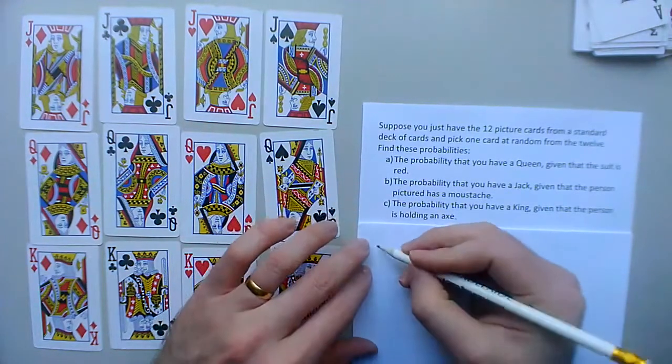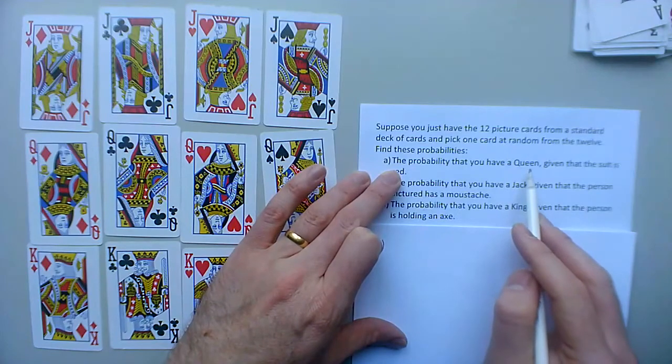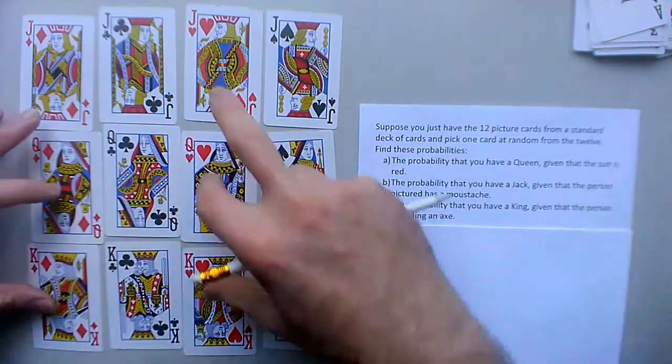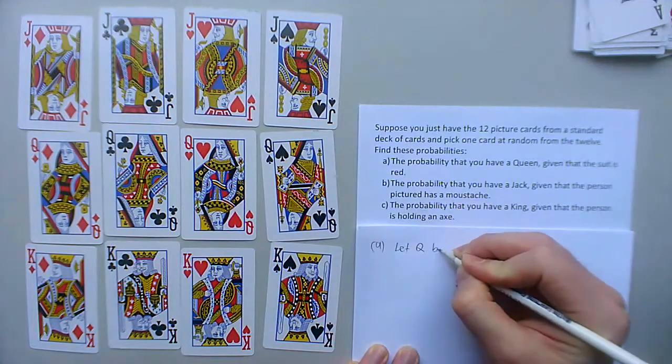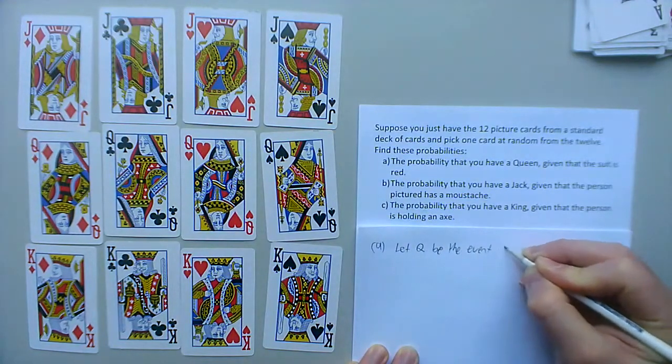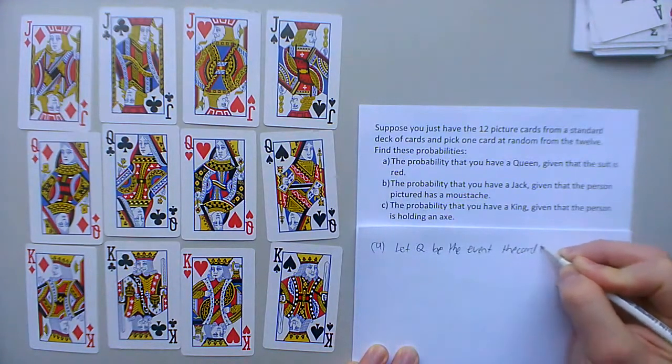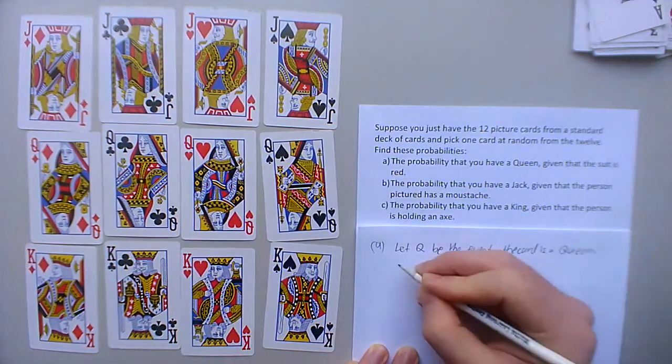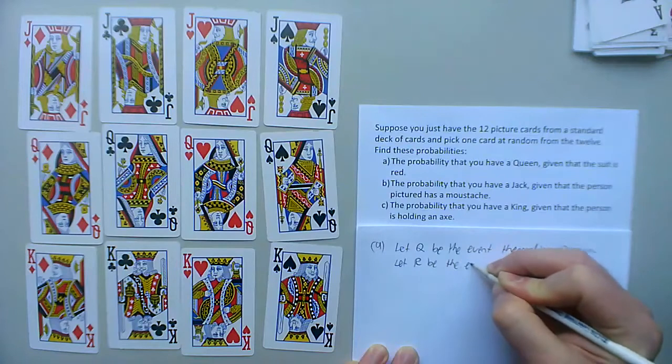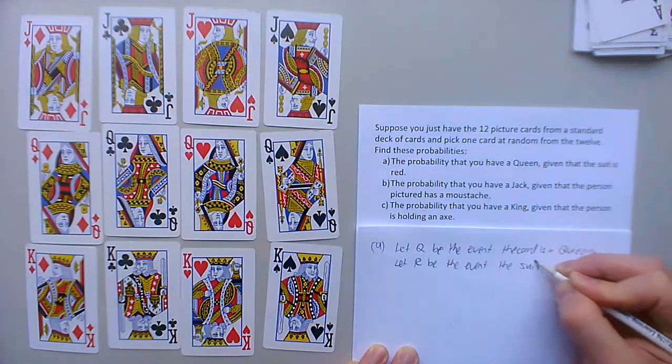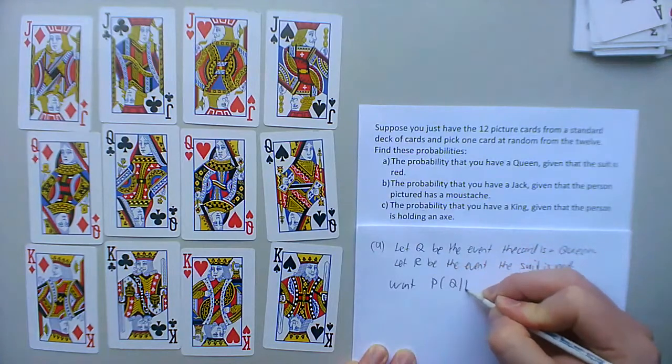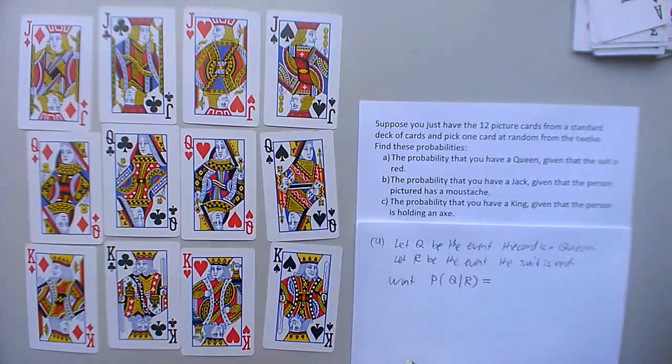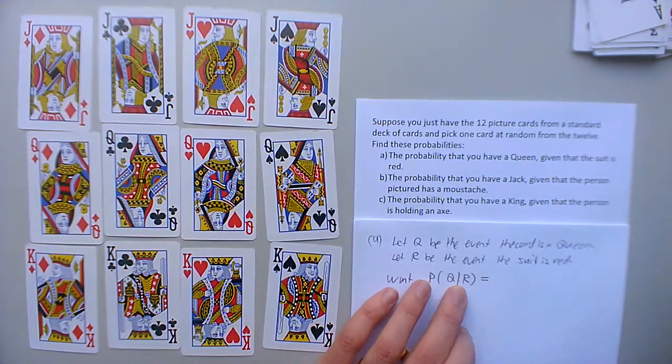All right, let me have a look. Part a: the probability that you have a queen given that the suit is red. These are the red ones, so that's a conditional probability. If I want to write in probability notation, I'm going to need letters to represent the events. So let Q be the event the card is a queen, and let R be the event the suit is red. Okay, so we want the probability of Q given R, which would be equal to something. So that means that we just look at the red cards and out of those we have to choose the queen.